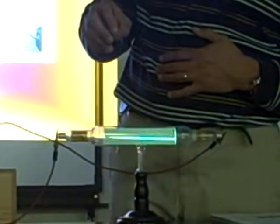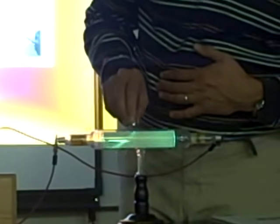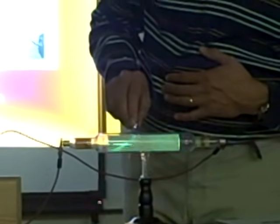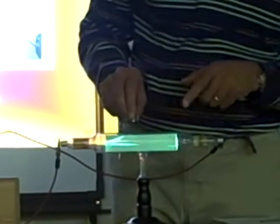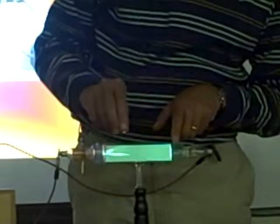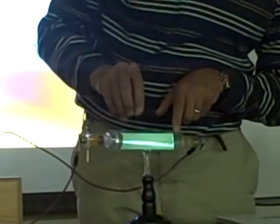We flip the magnet around and what do you think is going to happen this time? Well, if it's being attracted on one pole, see how it's being attracted there? Let me rotate it so the kids on this side of the room can see it. And then the other pole, do you see how it's being pushed down?